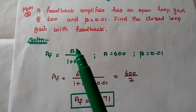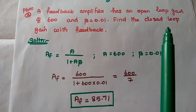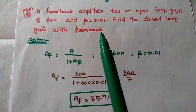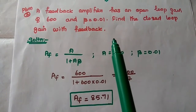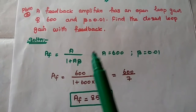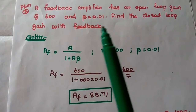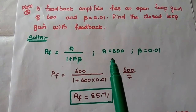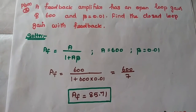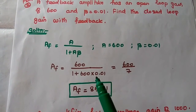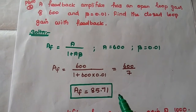In the second problem, a feedback amplifier has an open loop gain of 600 and β = 0.01. Find the closed loop gain with feedback. Using AF = A / (1 + A·β), with A = 600 and β = 0.01, substituting those values gives AF = 85.71.